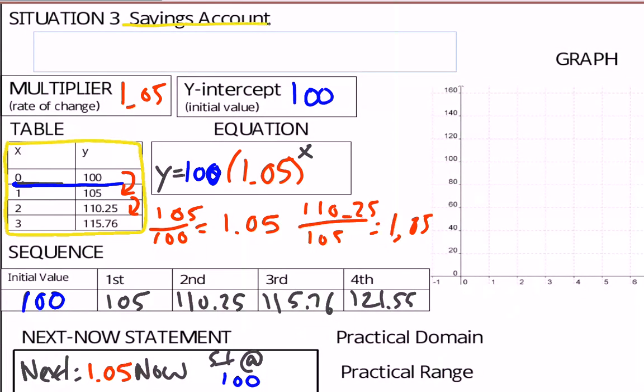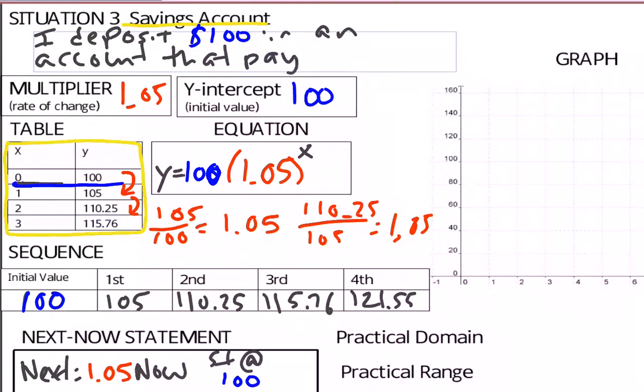Now I want to look at my situation. My situation is a savings account. So what does an initial value mean in terms of a savings account? It means I deposited $100 in an account that pays some percentage interest. So looking at my base, if I have 1.05, how far is that from a dollar? It is 5 cents from a dollar. So that means I am getting paid 5% interest.